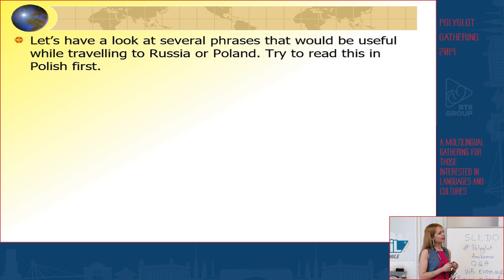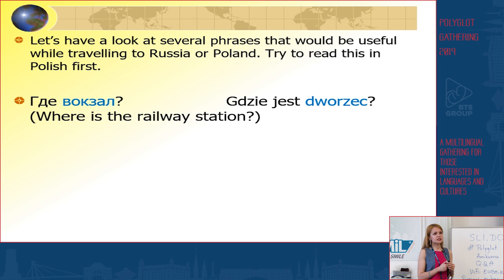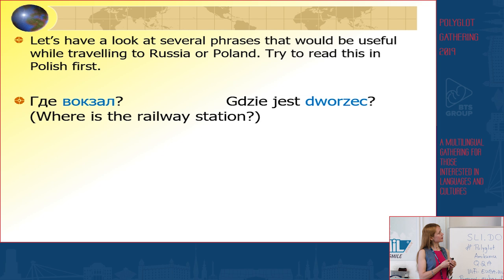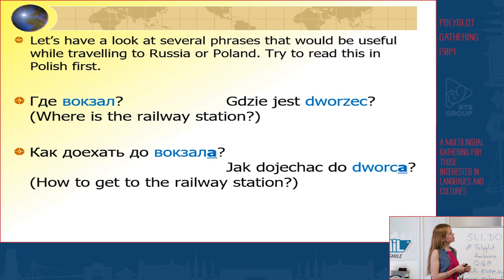Let's look at another example — this will be masculine gender. If you'd like to know where the railway station is in Polish, you would ask: Gdzie jest dworzec? — and in Russian: Где вокзал? In Slavic languages, masculine gender nouns end with a consonant, like these ones. If you'd like to know how to get to the railway station: Jak dojechać do dworca? — in Russian: Как доехать до вокзала? We add 'a' in both Russian and Polish to the noun in order to change it.